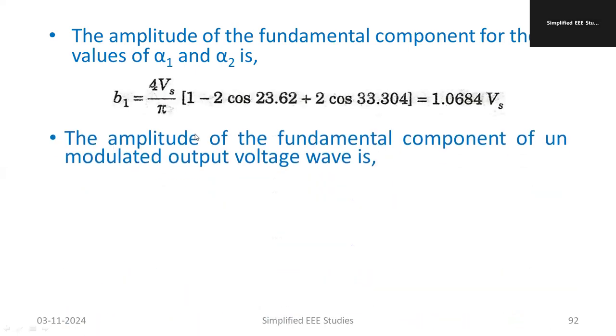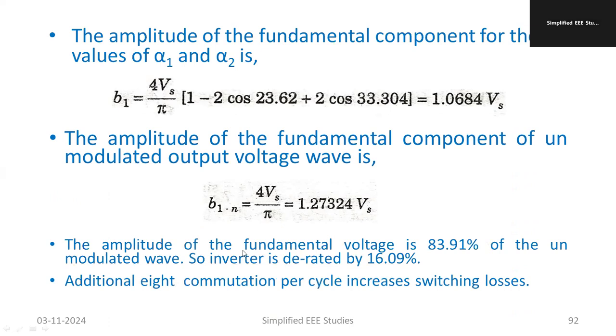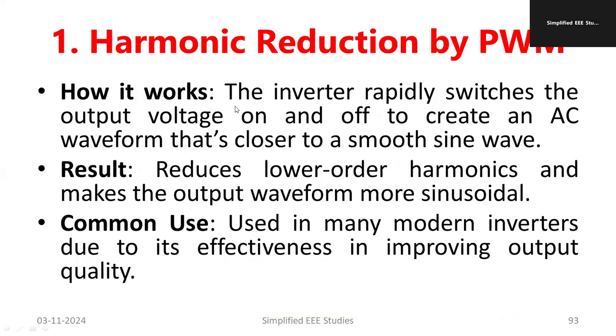Now b1, you can compute by using this particular formula. So this is actually called PWM techniques. Basically the inverter rapidly switches the output voltage on and off to create an AC waveform that is closer to the smooth sine wave. Here particularity is using multiple pulses. In the each half cycle we are making the output which is closer to the expected sinusoidal waveforms and removing third and fifth harmonic completely zero but there will be an effect of seventh ninth and eleventh order harmonics but that will not play much more important power quality issues. The result will be reduced the lower order harmonics especially third and fifth harmonics and we already computed the calculation also. We already familiar the calculation. Then common uses are modern inverters.